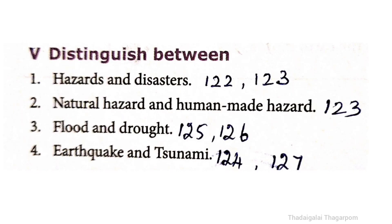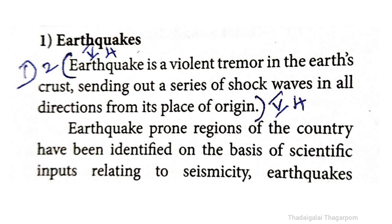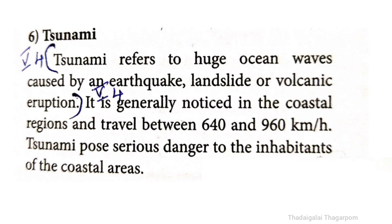Fourth distinction: Earthquake versus tsunami. The answer is on pages 124 and 127. An earthquake is a violent tremor in the earth's crust, sending out a series of shock waves in all directions from its place of origin. Tsunami refers to huge ocean waves caused by an earthquake, landslide, or volcanic eruption.